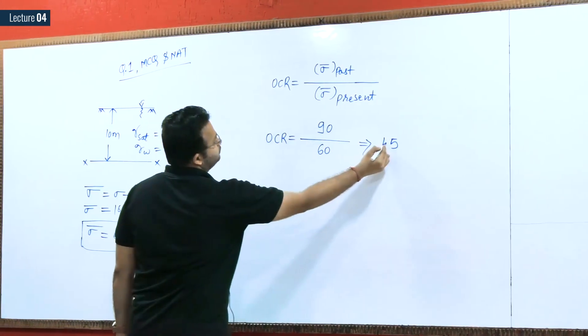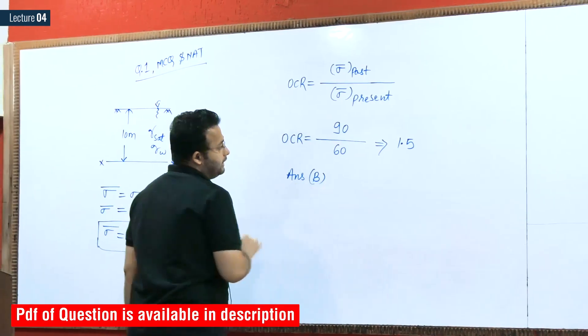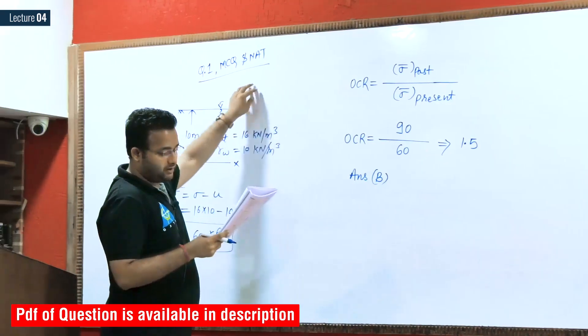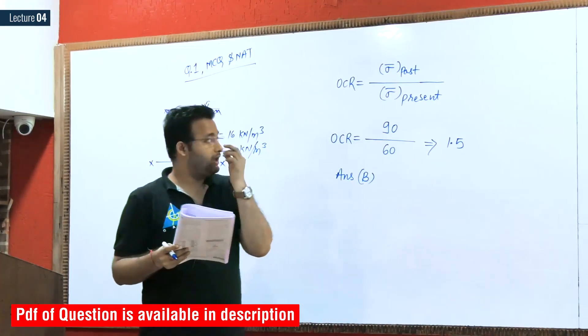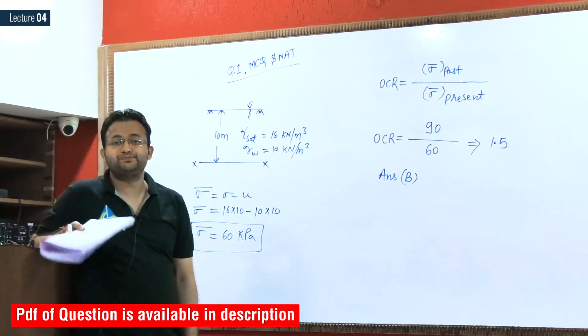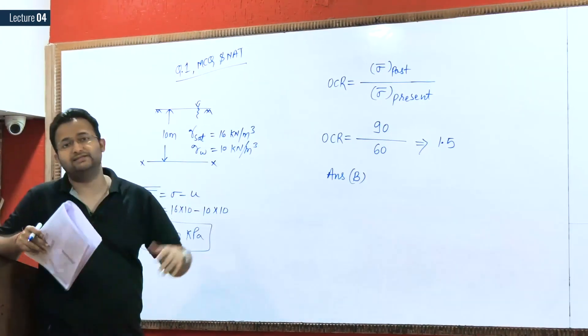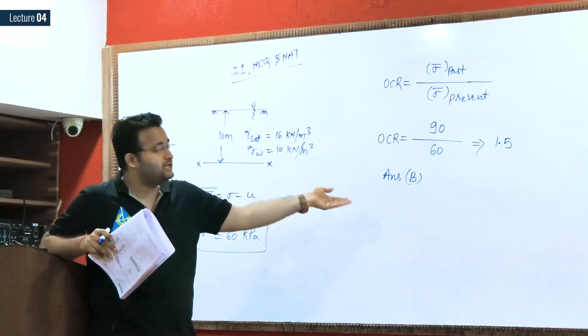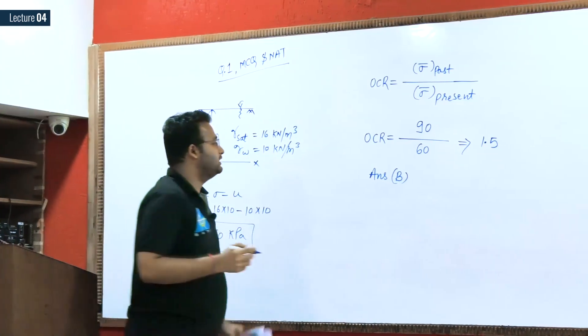This is your effective stress. Once you take the value of effective stress in present condition, we can put here 60 kPa. If you solve this, the answer will be 1.5. So answer is 1.5, option number B. This question was asked in the year 2016 by ESE Bangalore.